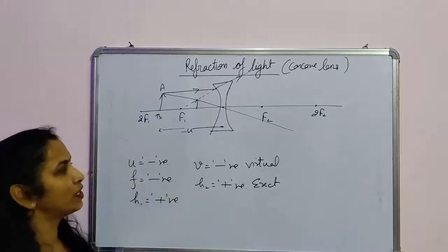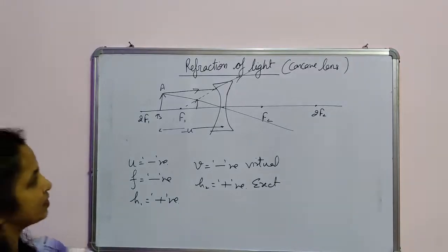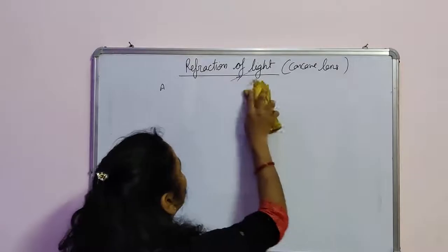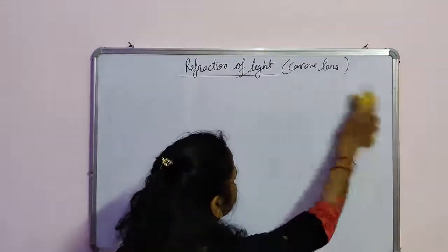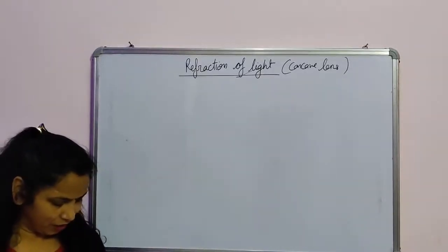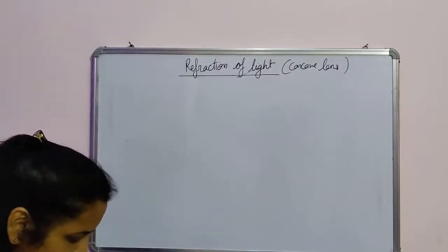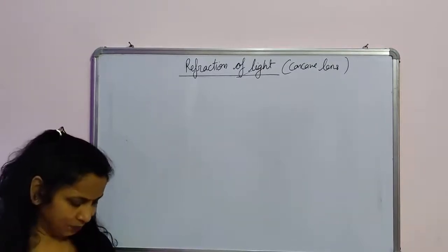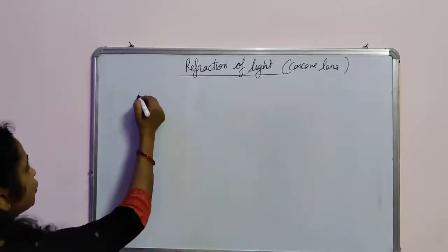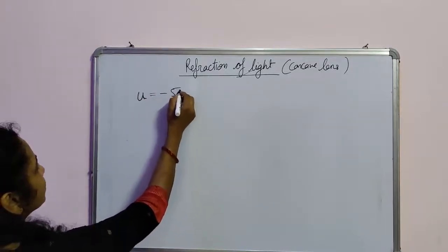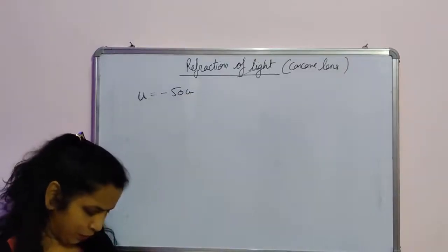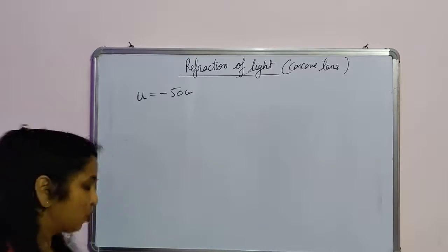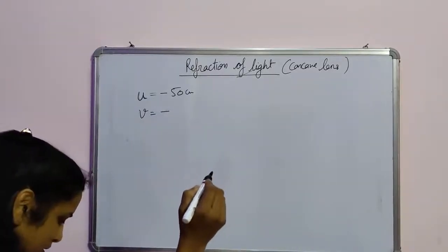Since I have explained the sign conventions of the concave lens, now I am going to give you a numerical problem. The question is: an object is placed 50 cm from a lens and produces a virtual image at a distance of 10 cm in front of the lens. Object placed 50 cm from the lens means U is equal to minus 50 cm. Since the image is virtual, V is equal to minus 10 cm.